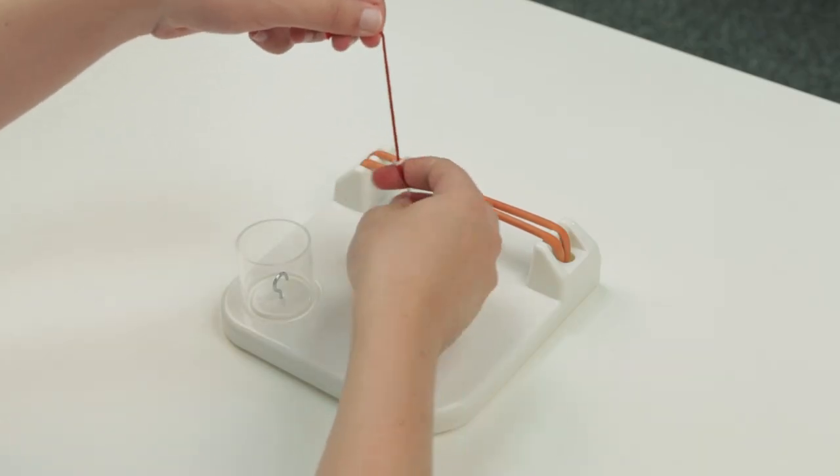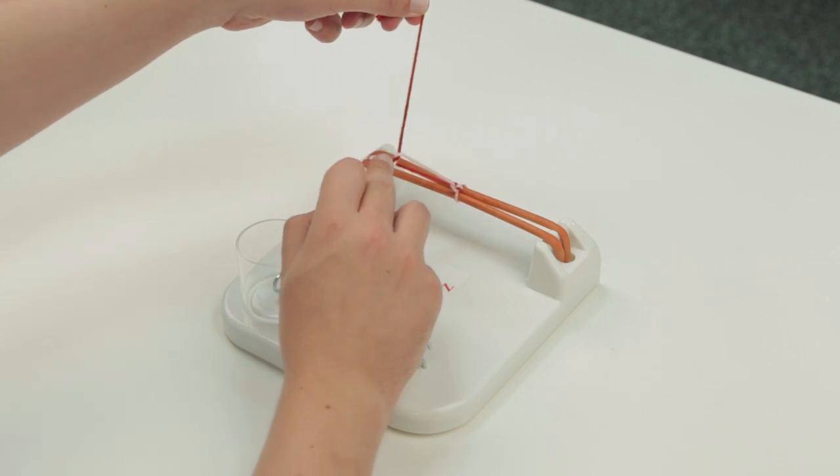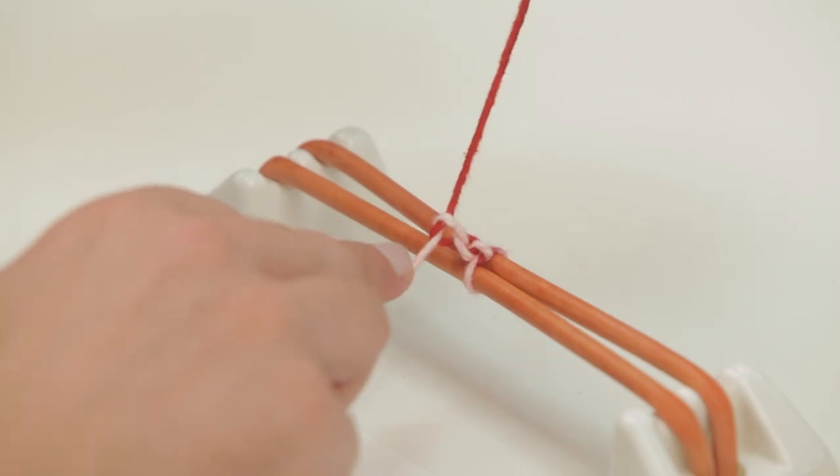Multiple throws can be used to hold a more secure knot. Typically this will be three throws for a braided suture or five for a monofilament.